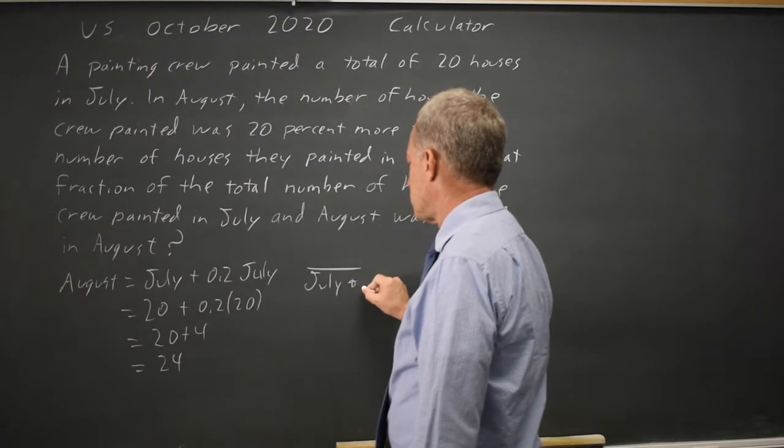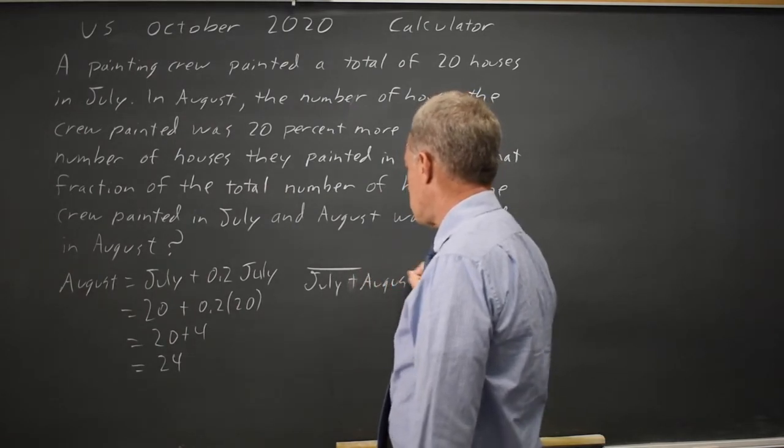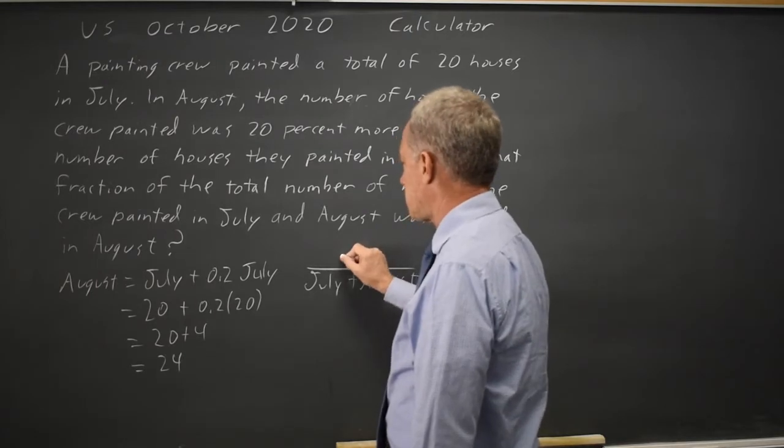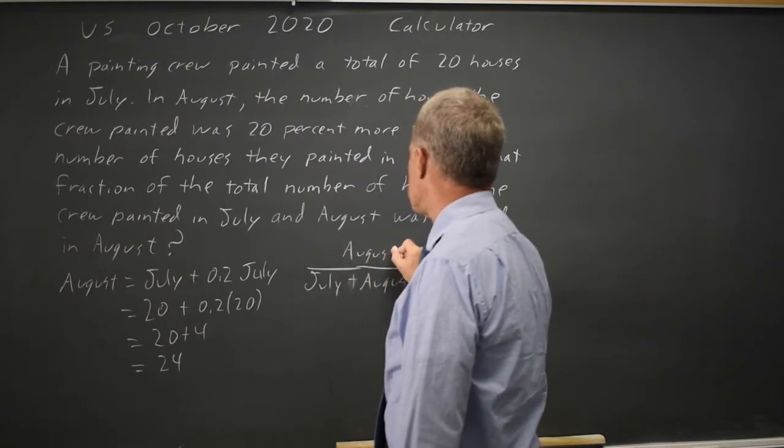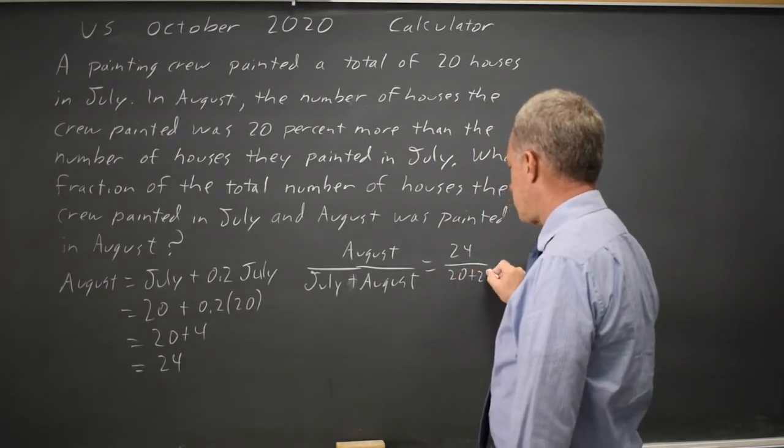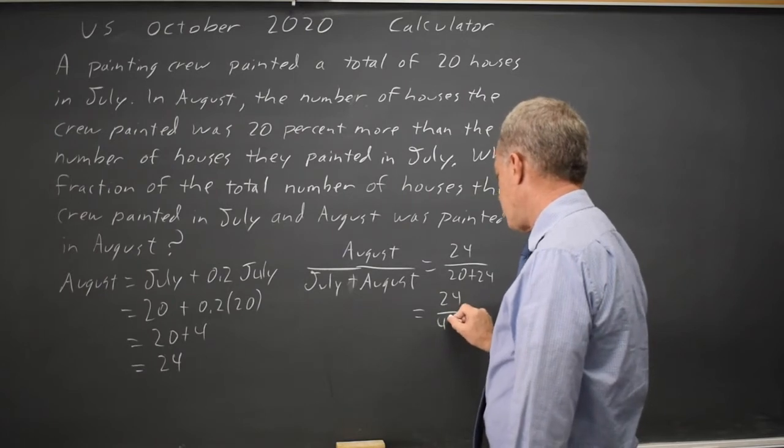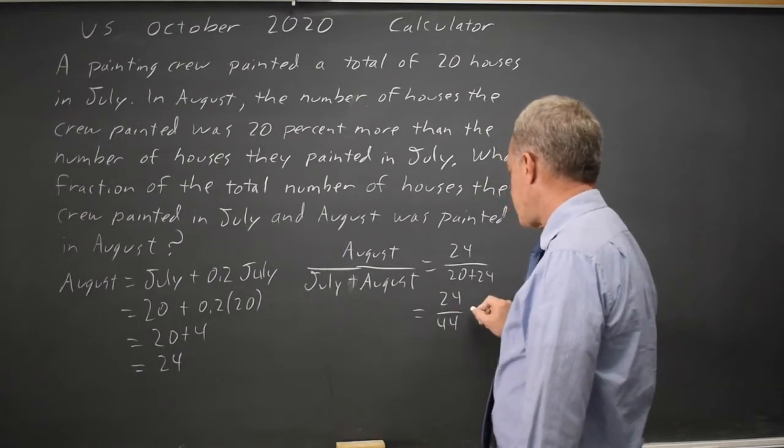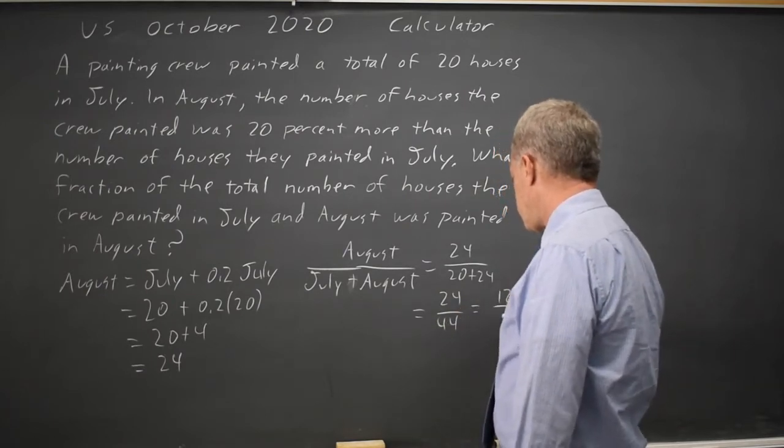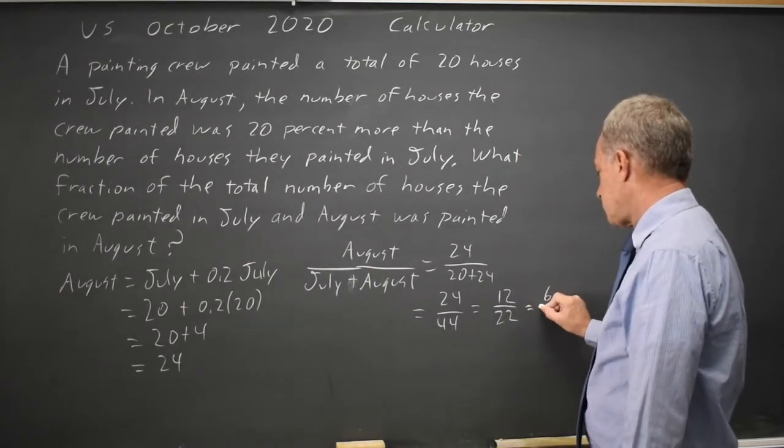so that's July plus August, what fraction was in August? So that is 24 over 20 plus 24, which is 24 over 44. And we can simplify that to 12 over 22, which we can simplify to 6 over 11.